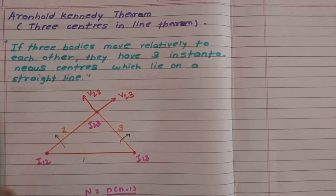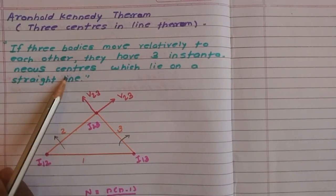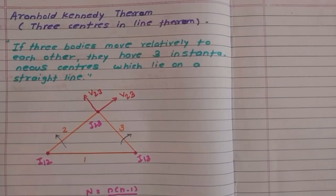The statement of this theorem is: if three bodies move relative to each other, they have three instantaneous centers which lie on a straight line. So let us see how it is proved.